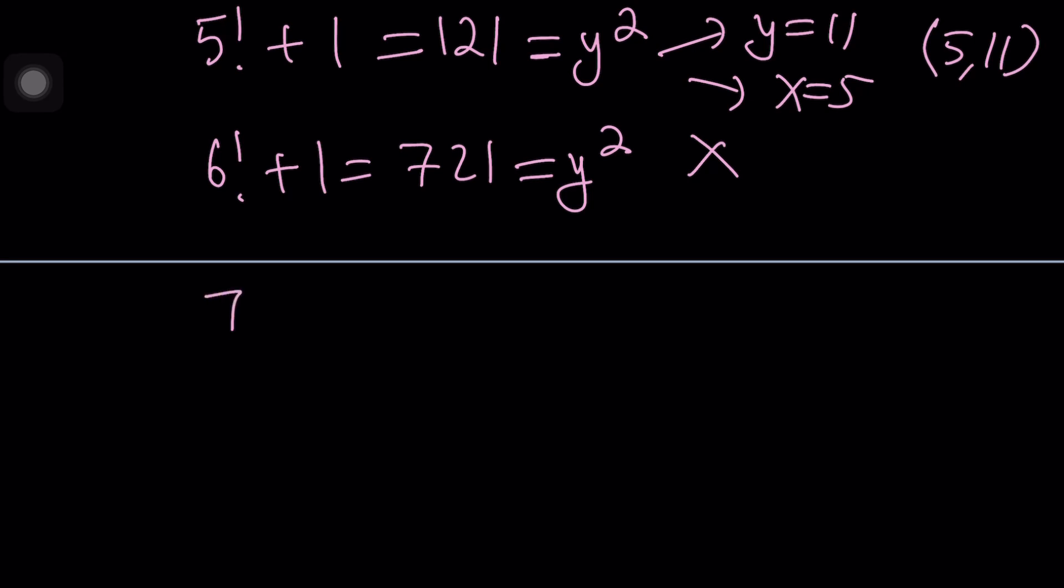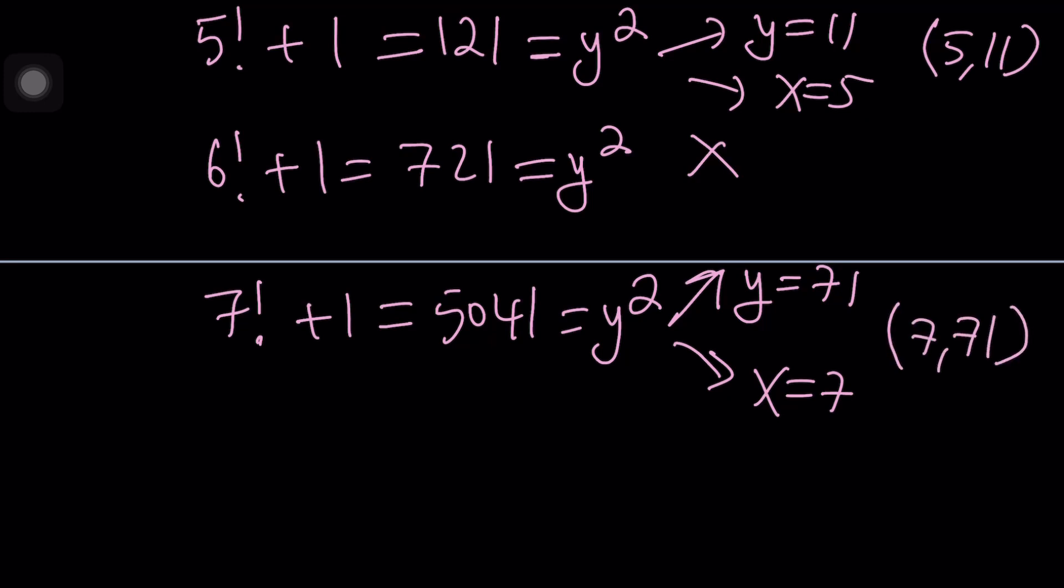Never give up, continue to work. 7 factorial plus 1 is 5041 and that just happens to be 71 squared. Isn't that just amazing? Life is full of surprises but math is full of just amazing surprises. y equals 71 is another solution with x equals 7, which means 7, 71 is another solution.